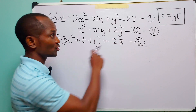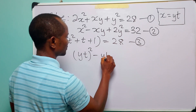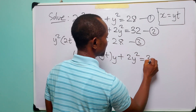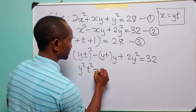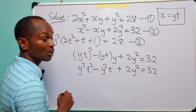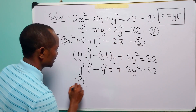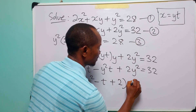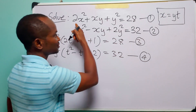Applying the same substitution to equation 2, we have yt squared minus yt multiplied by y plus 2y² is equal to 32. Opening the bracket we have y²t² minus y² plus 2y² is equal to 32. Factorizing y² out of this equation, we have y² times (t² - t + 2) is equal to 32.